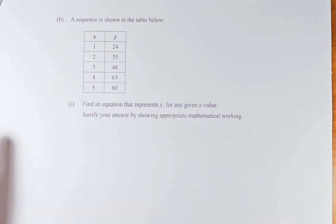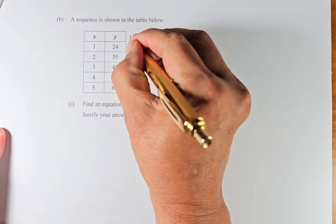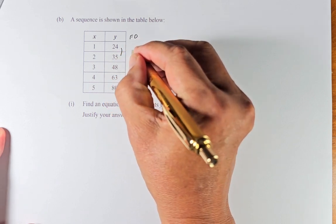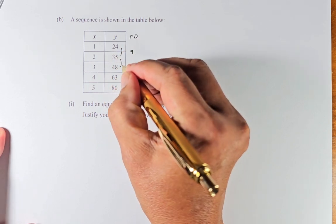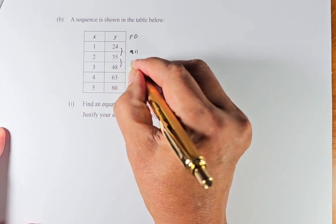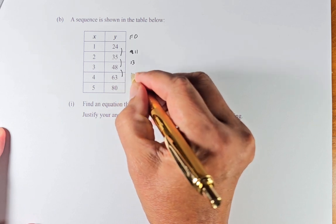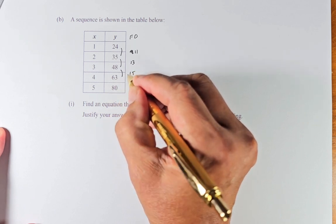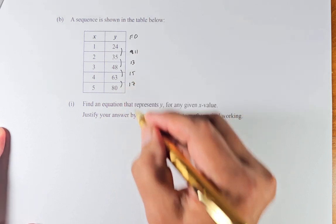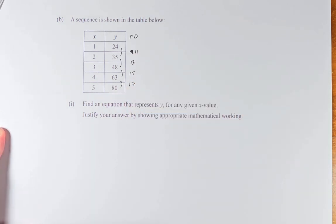Let's solve this. This is a quadratic equation as we will see in a moment. First, we need to find the first difference. From 24 to 35 is 11, 35 to 48 is 13, 48 to 63 is 15, and 63 to 80 is 17. If this is not the same number, then this is a quadratic equation. If it's all the same, then it's a linear equation.